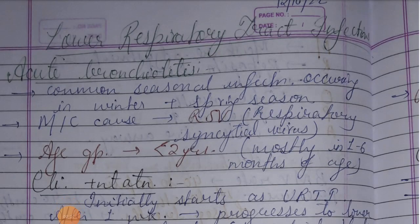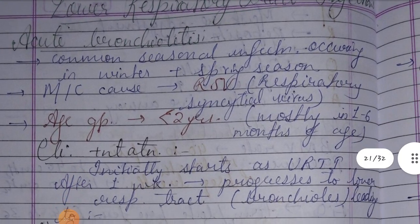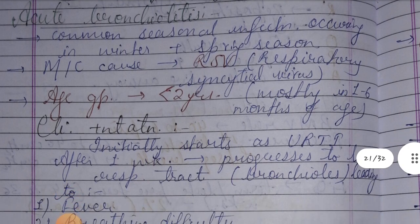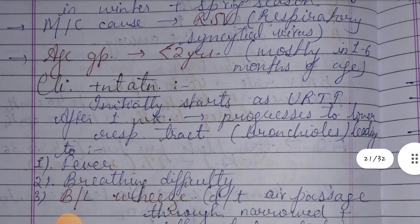Let's discuss the lower respiratory tract infections. First, acute bronchiolitis - a common seasonal infection which occurs in winter and spring. The most common cause is respiratory syncytial virus, that is RSV, and the age group affected is less than two years.